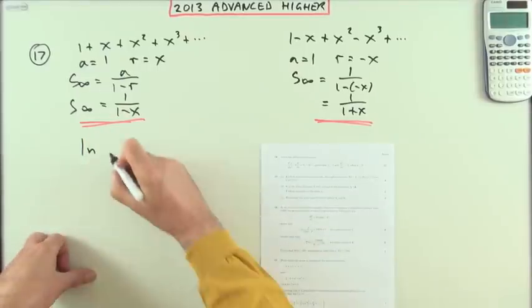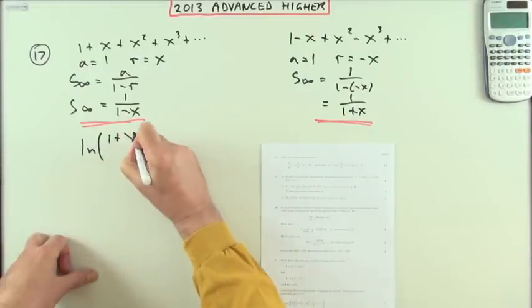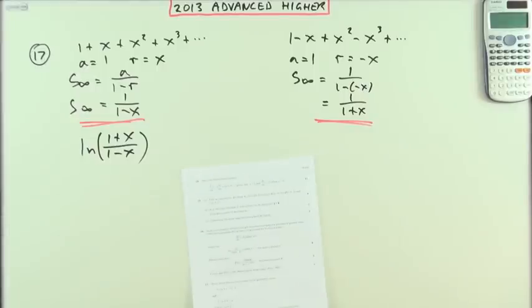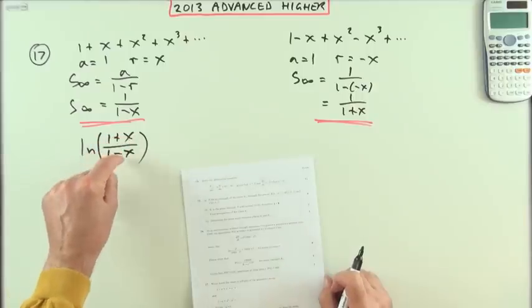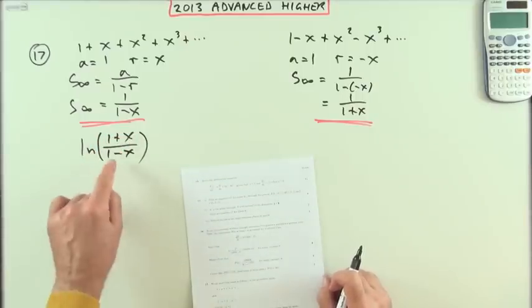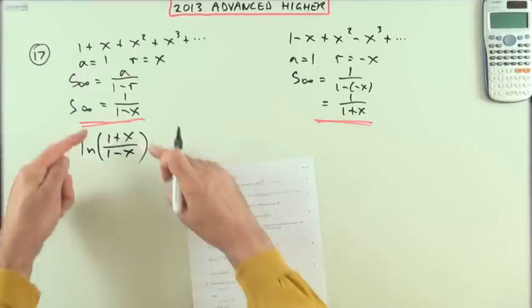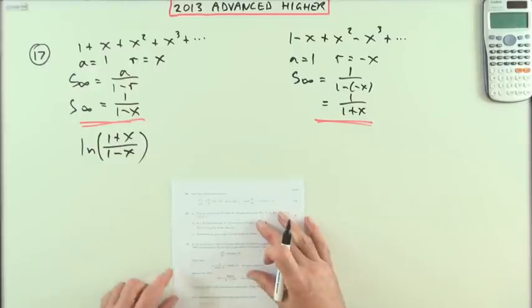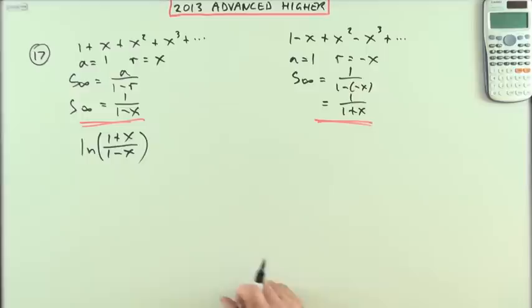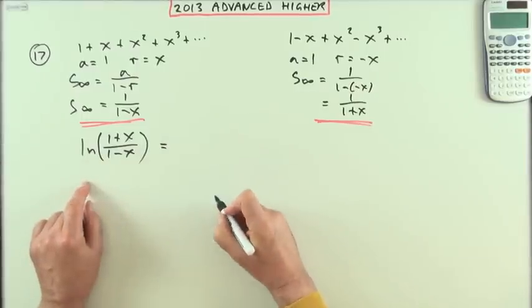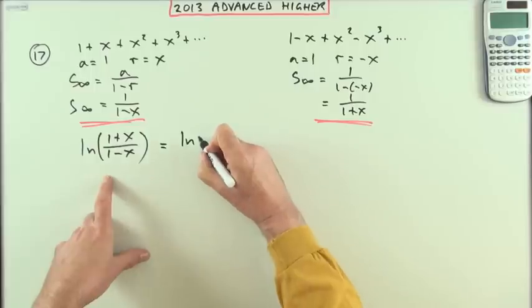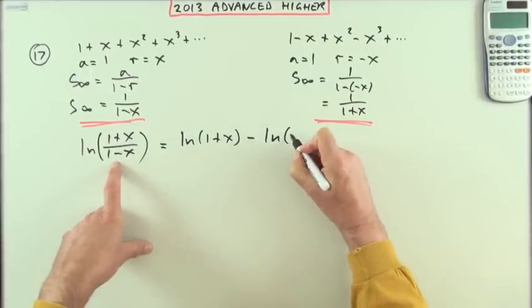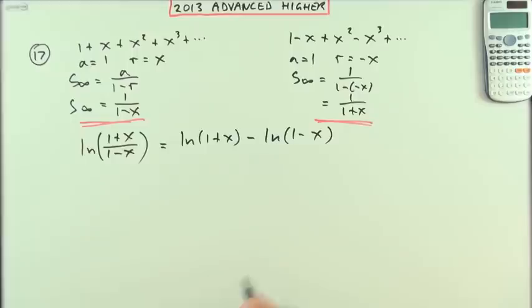When you look at that expression with (1+x)/(1-x), you notice similarities. You could break that up into ln(1+x) - ln(1-x), and there's a similarity—those are the derivatives of these things here.